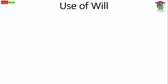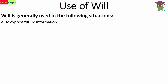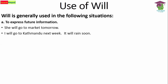Use of 'will': let's see how we can use 'will,' because in simple future we can use 'will' to make sentences. 'Will' is generally used in the following situations. First, to express future information. For example: 'She will go to the market tomorrow,' 'I will go to Kathmandu next week,' 'It will rain soon.' These are all future information statements.